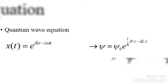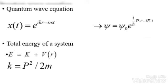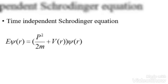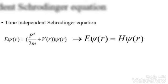The total energy of the system is calculated by summing the kinetic and potential energy of the system. We can also write the kinetic energy of the system based on the momentum of the system, as you can see here. Schrödinger multiplied both sides of the energy equation by the wave function and arrived at the time-independent Schrödinger equation.